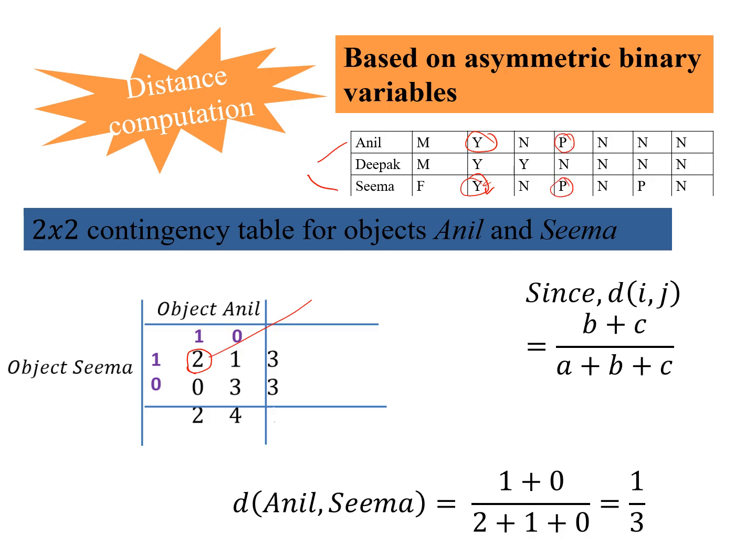Now let us look at the count of where Sima is 1 and Anil is 0. Sima is 1 and Anil, here you see. So similarly you can match out all the other components a, b, c, and here we get the dissimilarity or distance as 1 by 3.